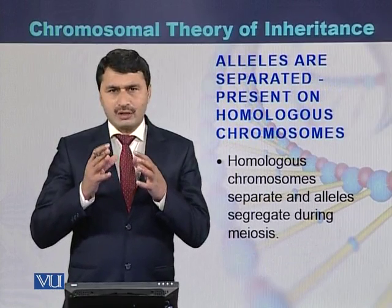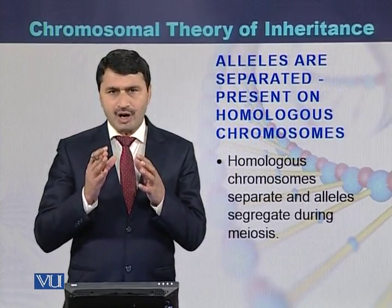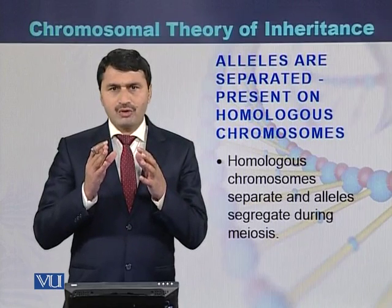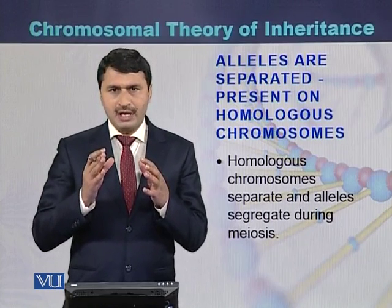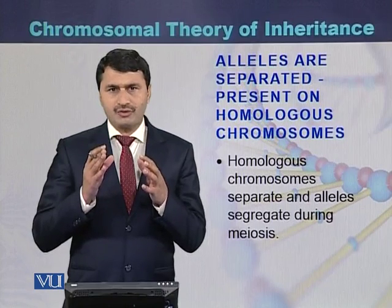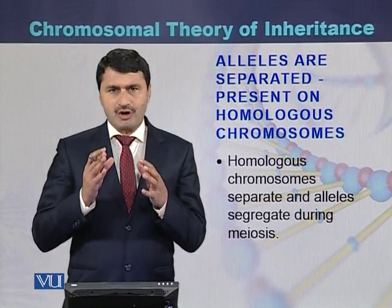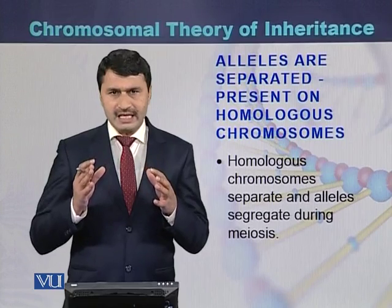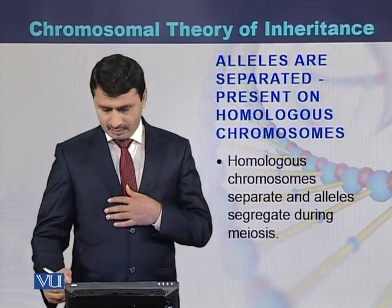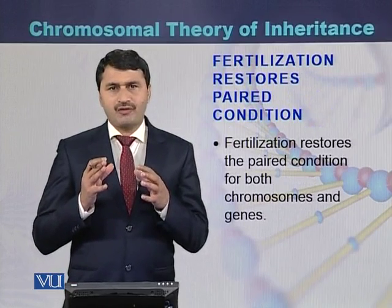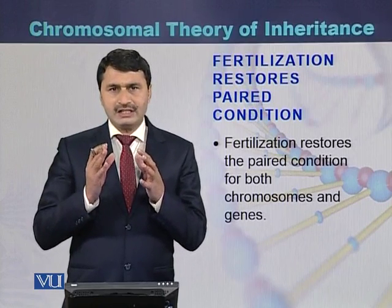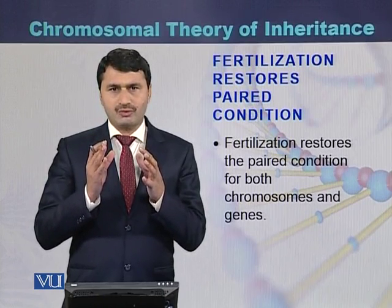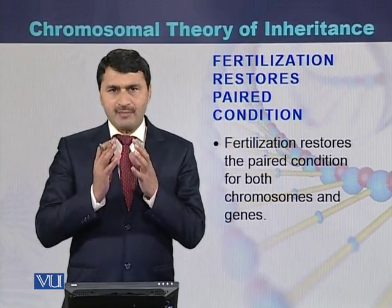Alleles are present on the chromosomes, which exist in the form of homologous pairs. When homologous chromosomes separate during meiosis, the alleles also separate, because each gene consists of two alleles and those alleles are on the chromosomes. When chromosomes segregate during meiosis, alleles also segregate. During fertilization, there is a restoration of alleles as the homologous chromosomes come back together.